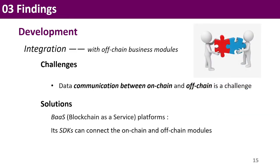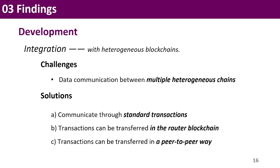We are going to talk about integration in two aspects. The first is integration with off-chain business modules. It is a challenge to achieve data communication between on-chain and off-chain modules, and we might provide a base platform whose SDKs can help developers connect them easily. The second is integration with heterogeneous blockchains. The supply chain system may include multiple heterogeneous chains among different consortia, and an inter-blockchain connection model is really helpful. The possible solutions are: first, heterogeneous blockchains can communicate through a standard translation; second, cross-chain transactions can be transferred by nodes in a router blockchain; and third, transactions can be transferred in a peer-to-peer way without any third party.